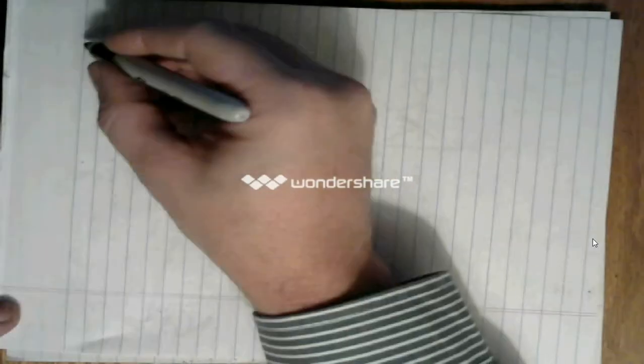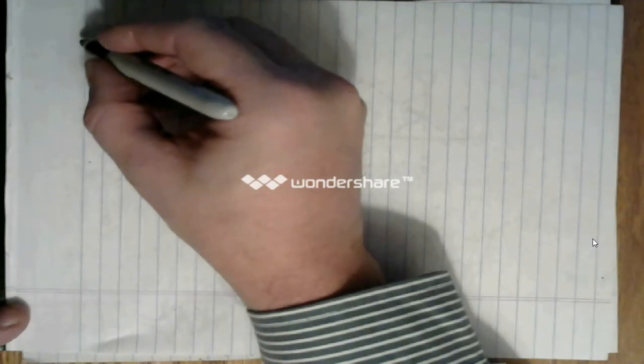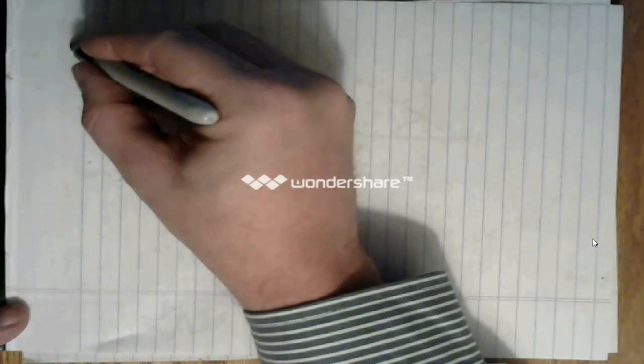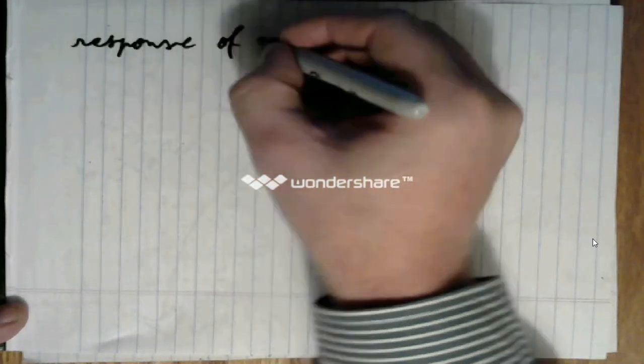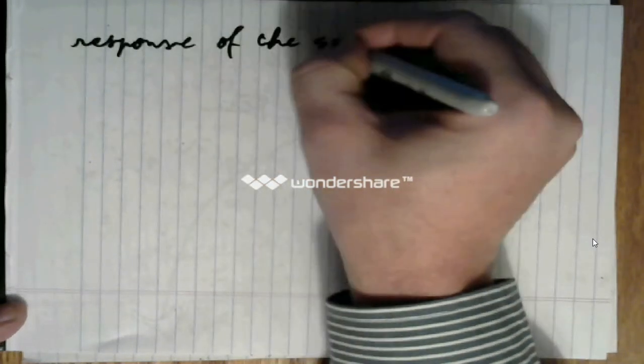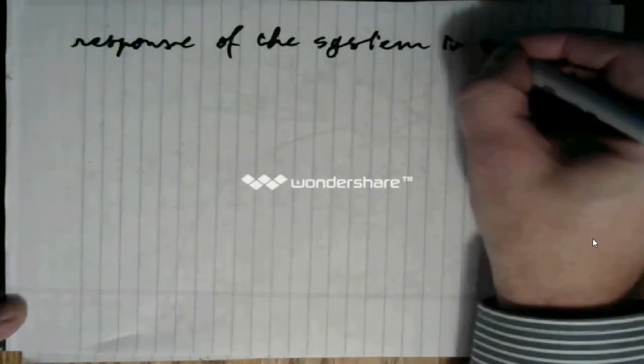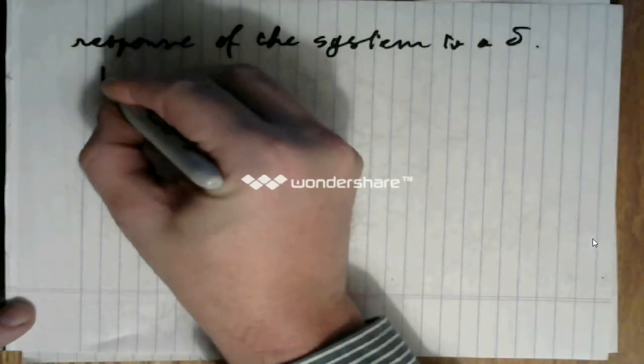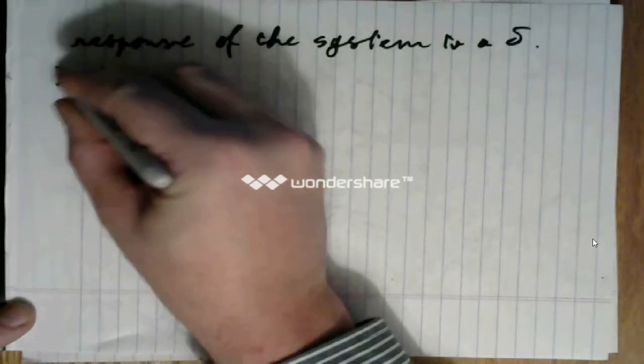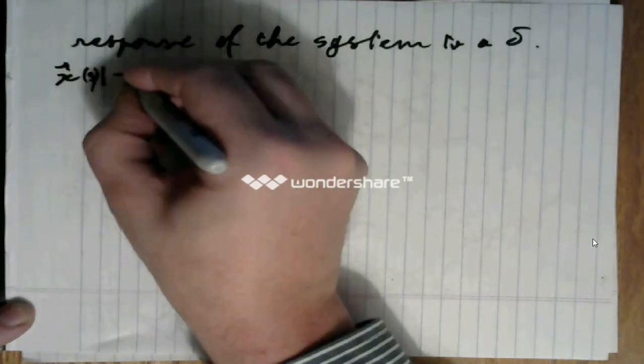And we're going to go back to the response of our system to an impulse. From the reflections we have led so far, we know that the response of the system to a delta is x hat of s.